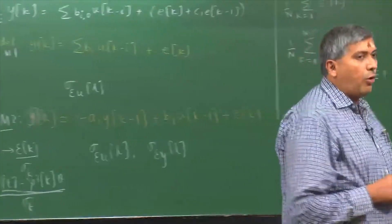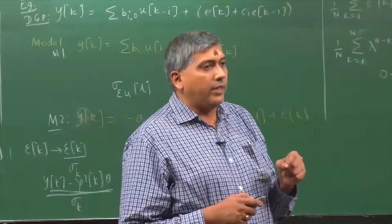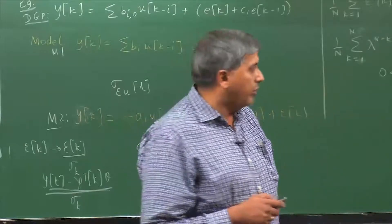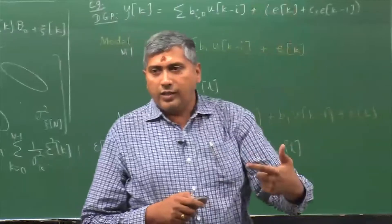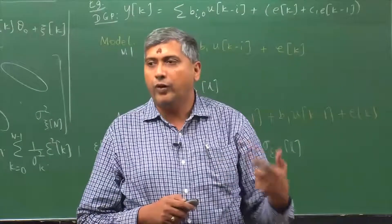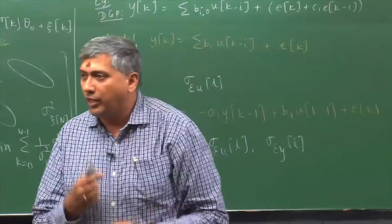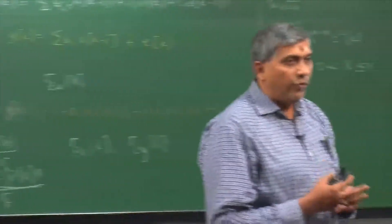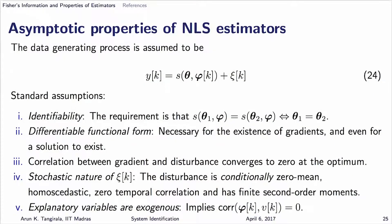The other thing to remember is that although I cannot assess the properties of the estimator very easily, there are a bunch of conditions under which the properties of the estimators are given. The properties of interest are: consistency, efficiency, and the asymptotic distribution of the estimates, which helps in constructing confidence intervals. The conditions can sound intimidating — identifiability, continuity, stochastic differentiability, exogeneity — but if you understand what they mean, it is easy. All it says is: there should be a unique solution, the objective function should be differentiable, and there should be no correlation between the gradient and the disturbance.